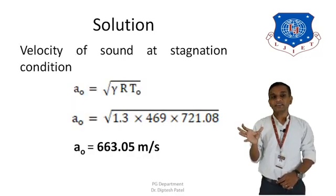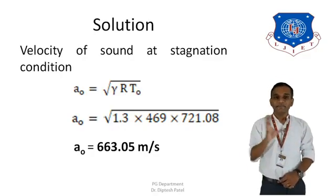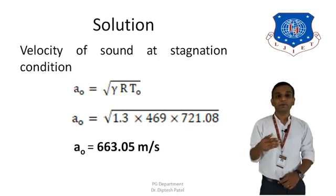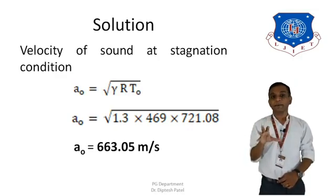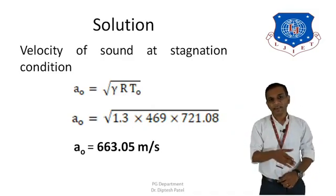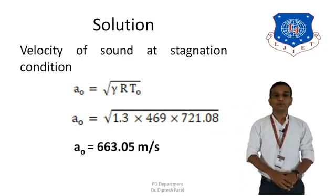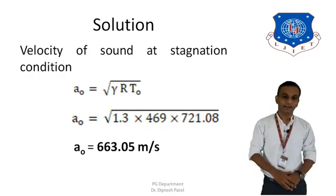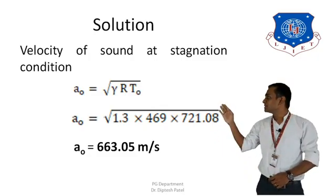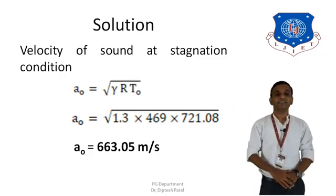Now using the stagnation temperature, we calculate the stagnation velocity of sound with the formula A₀ = √(γRT₀). Substituting the values: A₀ = √(1.3 × 469 × 721.08). Going through the calculation, we get A₀ = 663.05 m/s. This is our second finding — the stagnation velocity of sound.